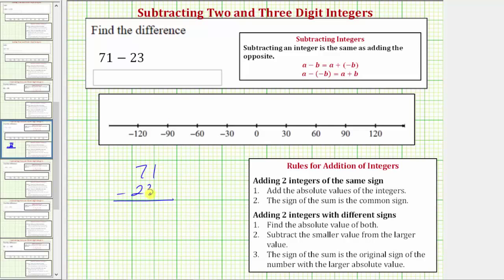And subtracting, we need to perform an exchange here. So the seven becomes a six, and now we have 11 ones. 11 minus three is eight, and six minus two is four. The difference is 48.